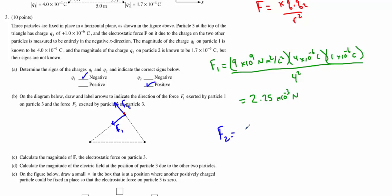F2 is going to be the same equation, just different numbers. We're going to use this value of charge down here, which is the 1.7 by 10 to the negative 6 coulombs, and then we're going to continue to have that 1 by 10 to the negative 6 coulombs, that's charge 3, and we're going to divide by their separation, which was 3 meters squared. And we're going to get a force, due to that charge, of 1.7 times 10 to the negative 3 newtons. This is the 1.7 by 10 to the negative 3, this is the 2.25 by 10 to the negative 3.